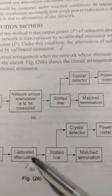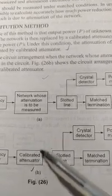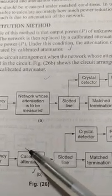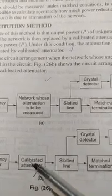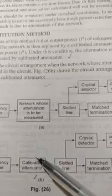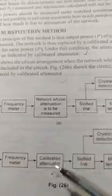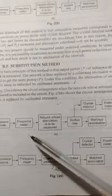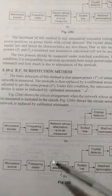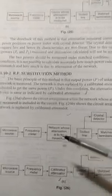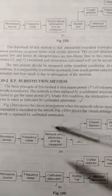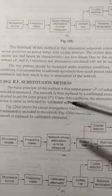By adjusting the calibrated attenuator until the power meter shows the same reading as before, whatever attenuation value we read from the attenuator is itself the attenuation loss of the device under test. This is how attenuation loss is measured using the RF substitution method. These are the two methods for attenuation loss measurement.